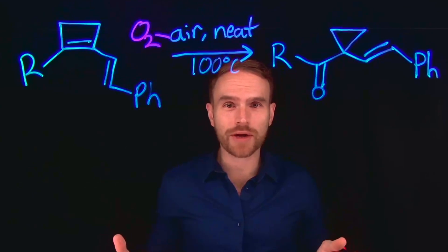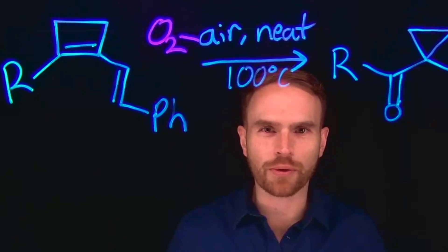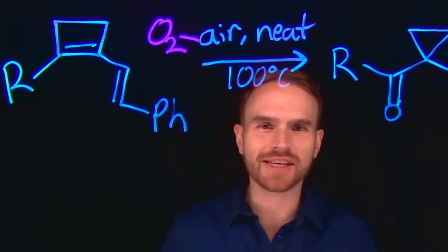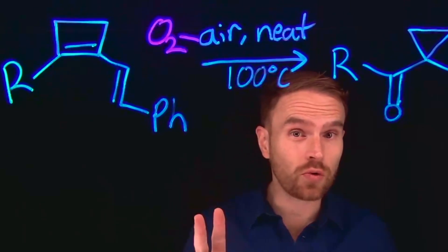So oxygen is actually a reactant in this chemical transformation. Now if you've ever learned anything about advanced molecular orbital theory, you know that oxygen is actually a diradical, or it's a paramagnetic species that actually has two unpaired electrons.